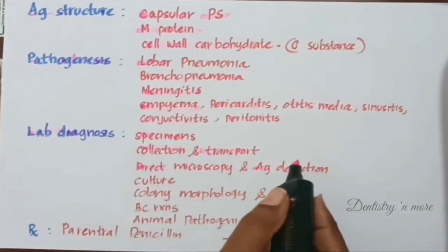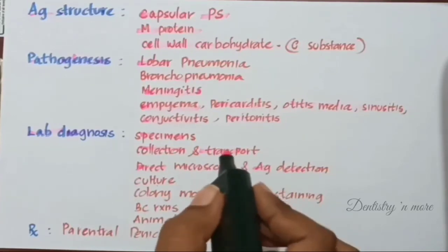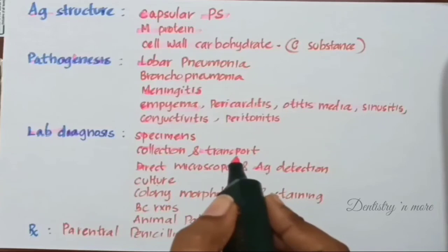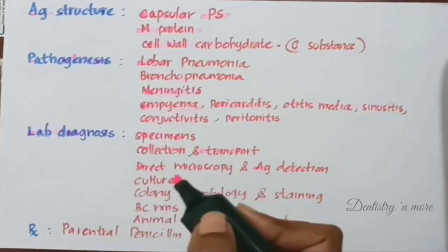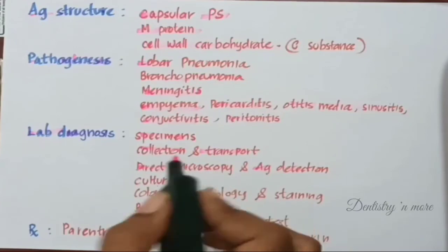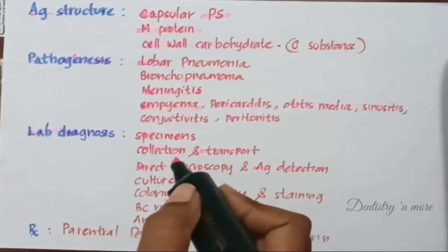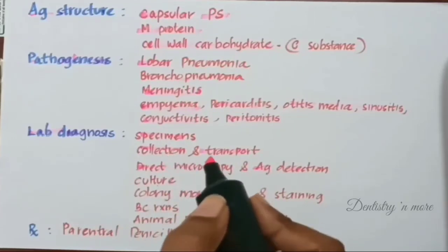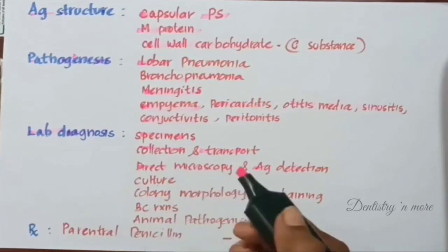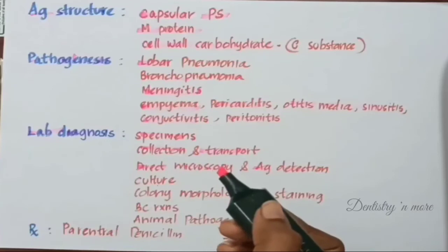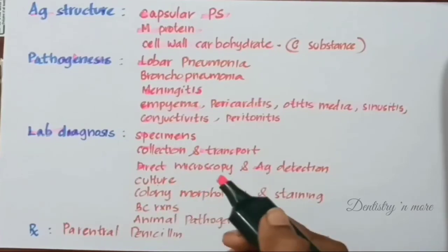Gram staining of a smear will reveal a large number of polymorphs and typical organisms. Capsular swelling may be observed under microscope when pneumococci are mixed with type-specific antisera. The capsular polysaccharide antigen can be demonstrated by counter-immunoelectrophoresis in blood, urine, and CSF. The antigen can also be detected by immunochromatographic assay, latex agglutination, or coagglutination.